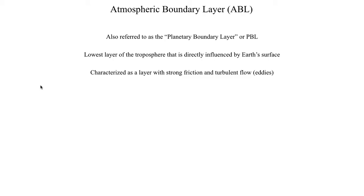If the atmospheric boundary layer extends up to one kilometer in altitude above ground level, then from the surface up to one kilometer you've got a region of relatively strong friction and turbulent flow, and then above that you don't have as much friction or turbulent flow. Usually there's a really sharp cutoff right at the top of the boundary layer. Sometimes, however, it's really hard to identify the depth of the atmospheric boundary layer based on the definition of friction and turbulent flow.